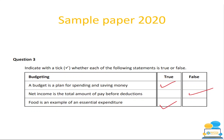Here's a sample paper from 2020. Question three is a short question asking you to indicate with a tick whether each statement is true or false. If you put two ticks on the same one — say both true and false — you're cancelling it out and getting zero marks. For example: a budget is a plan for spending and saving money — that is true. Net income is your income after all deductions have been taken out — in this case that statement as given is false. Food is an example of essential expenditure — yes, it's a need — so that is true. If you don't know the answer, guess it — there's a chance you could get it right.